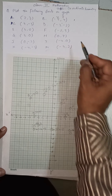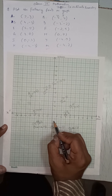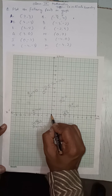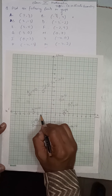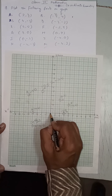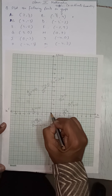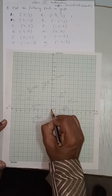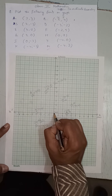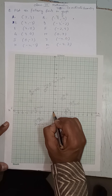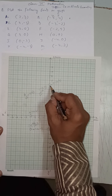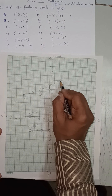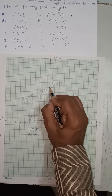Point H is (0, 7). X value is 0, meaning the abscissa is 0, so we do not move right or left — we stay at the origin. From there we go upward because y is plus 7: 1, 2, 3, 4, 5, 6, 7. So point H at (0, 7) lies on the y-axis.